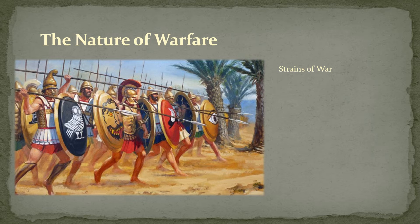Greece was ill-equipped to deal with this type of war. The Persians could continue a long war because they had a professional army — the job of the Persian soldier was to be a soldier. But in Greece, soldiers were part-timers; they were farmers for the most part. This was fine for a quick engagement — you can be away from your farm for a week — but 30 years of war put enormous strain on Greece, because if farmers are out fighting, they're not working their land.